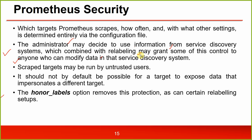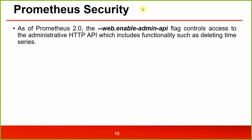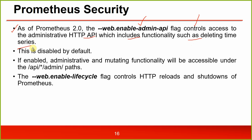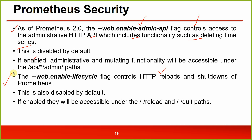The honor_labels option removes this impersonation protection, as can certain relabeling setups. As of Prometheus 2, the --web.enable-admin-api flag controls access to the administrative HTTP API, which includes functionality such as deleting time series. This is disabled by default; if enabled, administrative and mutating functionality will be accessible under the /api/v1/admin paths.